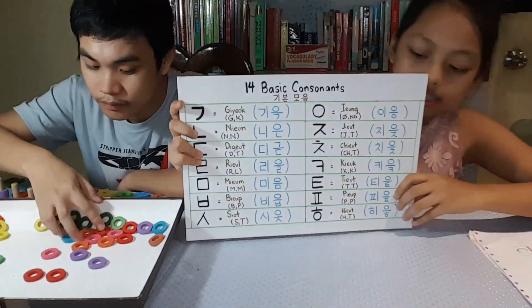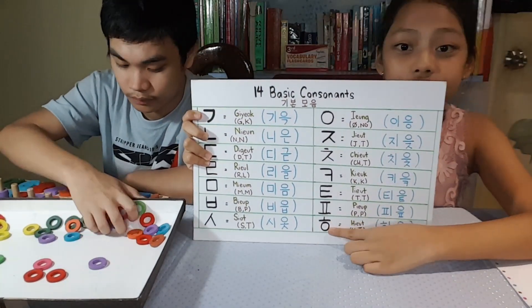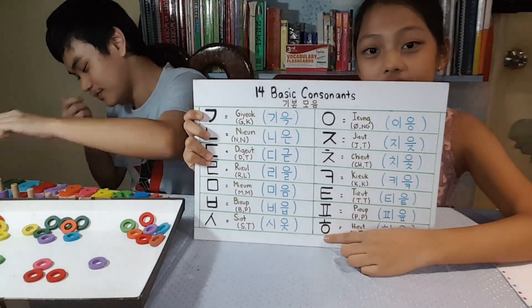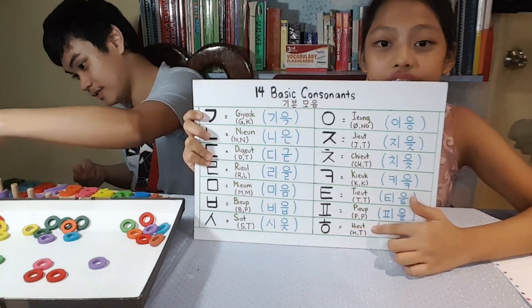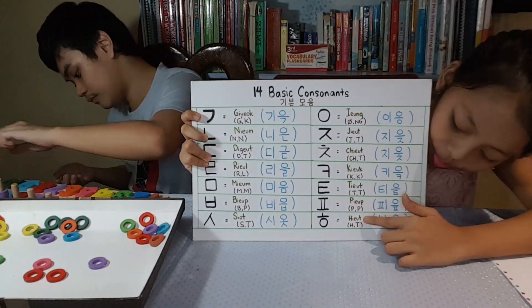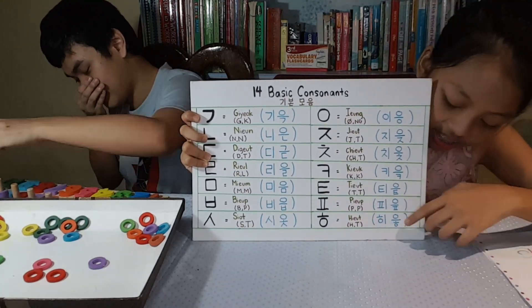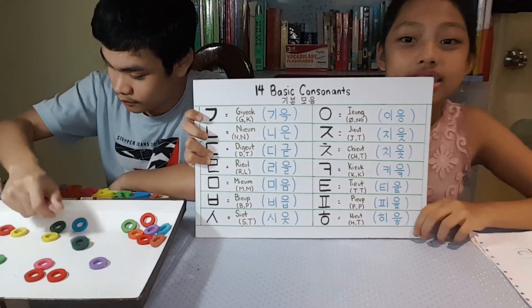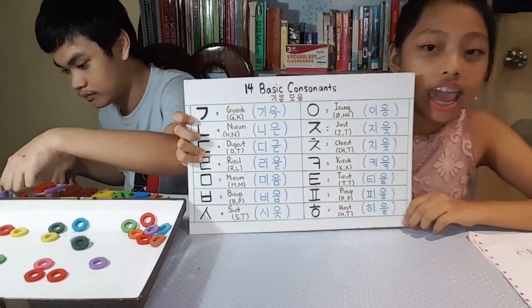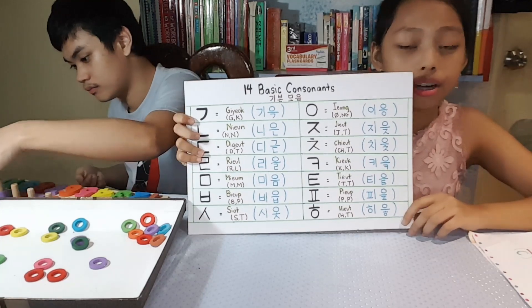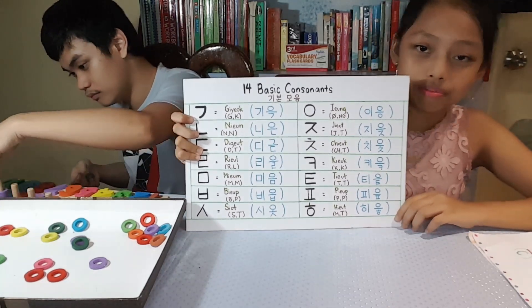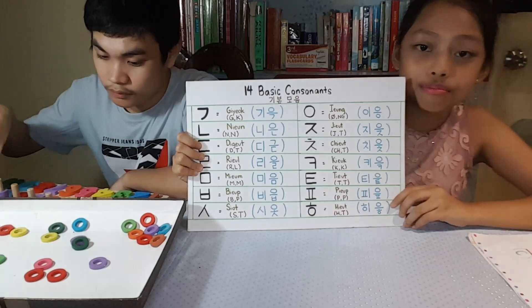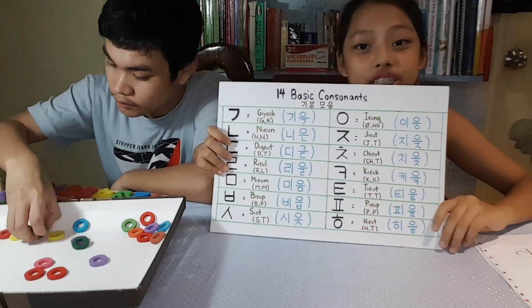Now let's move on to our last consonant of the day, Hi-ut. This is the Hangul symbol, Hi-ut is the romanization name, and this one is the Hangul name. The consonant Hi-ut is H sound in the beginning and T sound in the final or in the end. So those are all the 14 basic consonants, the 14 kibon cha-ong, that we have learned.